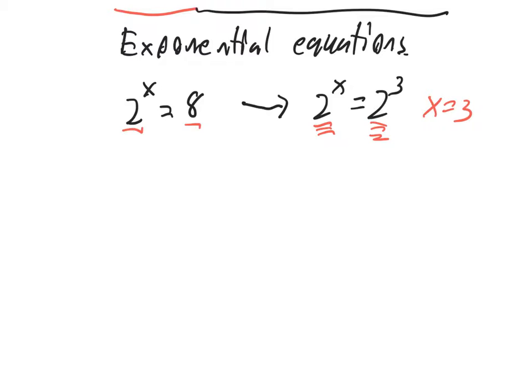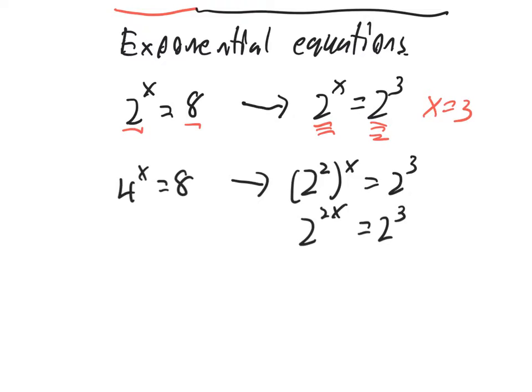Let's say you want to solve 4 to the x is equal to 8. 4 is a power of 2. 8 is a power of 2. Let's write everything as powers of 2. 4 is 2 squared. So 4 to the x is 2 squared to the x. 8 is 2 cubed. So that means 2 to the 2x is equal to 2 to the third. I got the same base. Therefore, same base of 2.